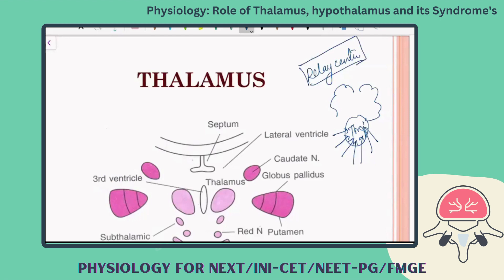The thalamus is the relay center for all sensory signals. If your thalamus is defective, it will not relay any sensation to the brain. All third-order neurons in the dorsal column pathway synapse here, and then signals are sent to the sensory cortex, motor cortex, occipital lobe, auditory cortex, and visual cortex.